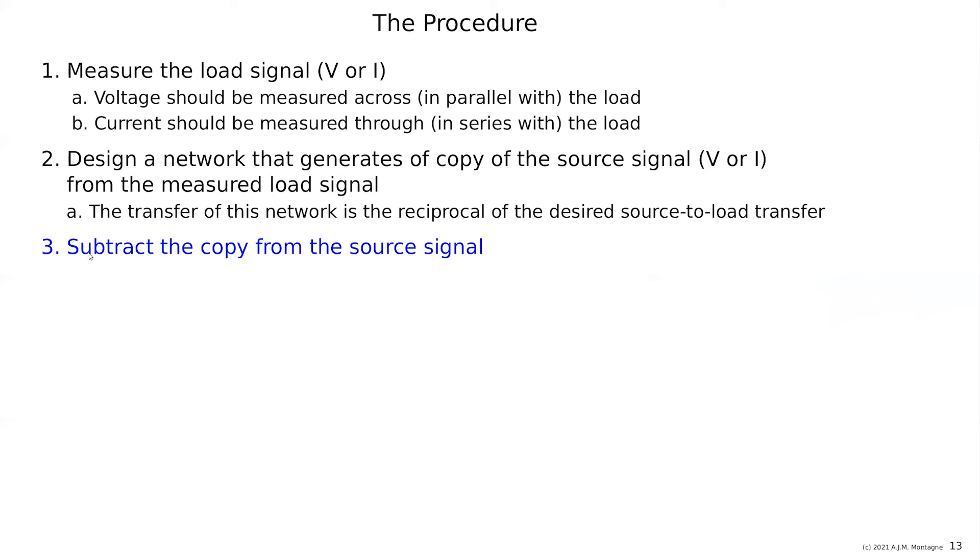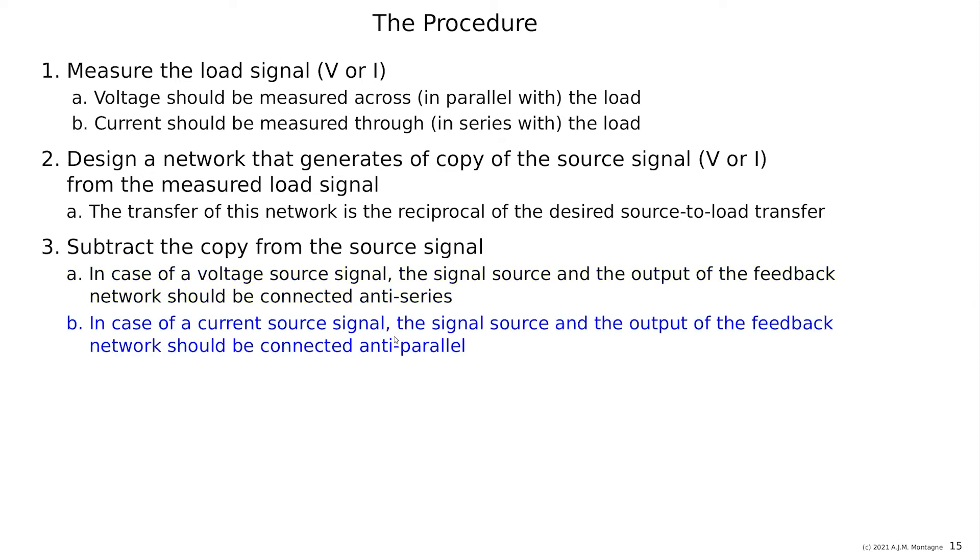The next thing is I subtract that copy from the source signal. So how do we do that in case of voltage? It needs to be connected anti-series, so the minus of the two things together or the pluses of the two together, but because you do V1 minus V2, you have to place them in series and this minus sign makes it what we call anti-series. If it would be current, then you have to connect them anti-parallel, so because current is subtracted in a node and voltage is subtracted in loops.